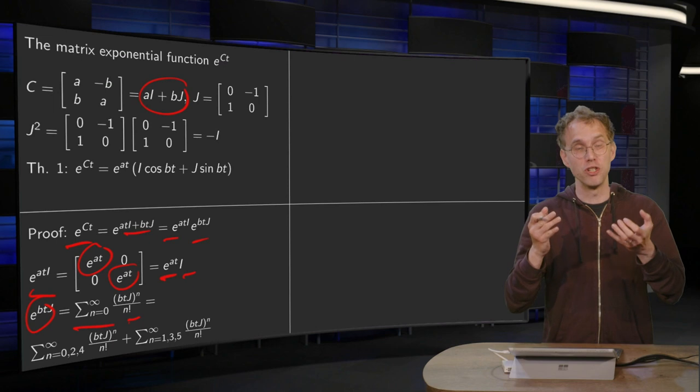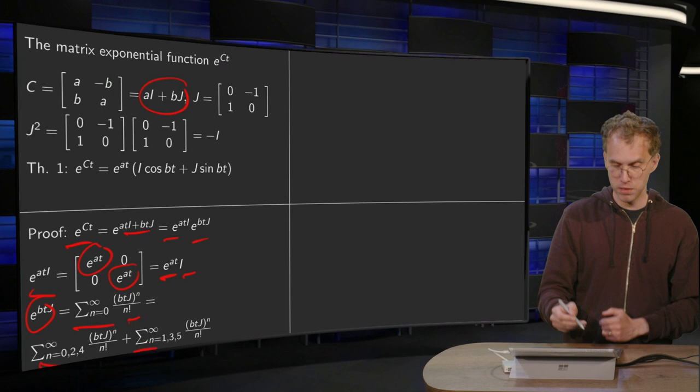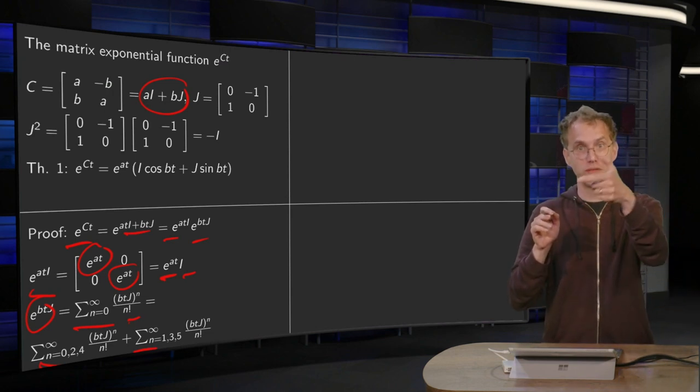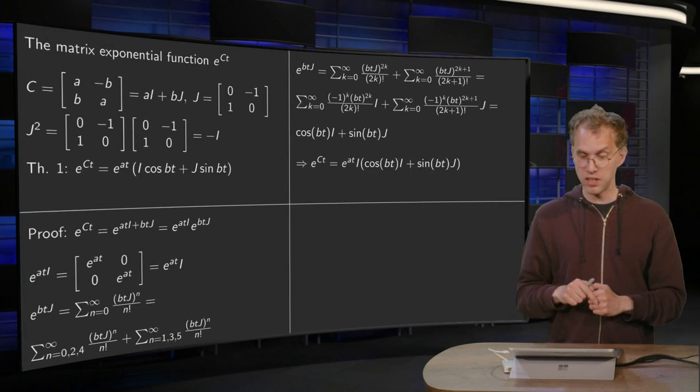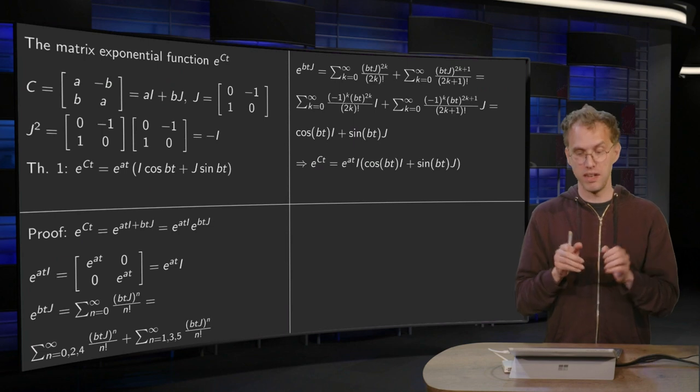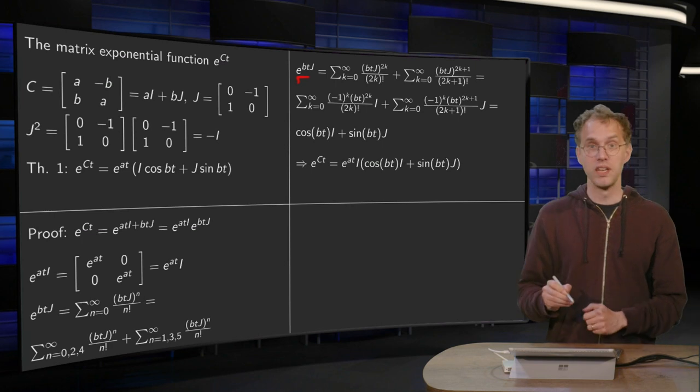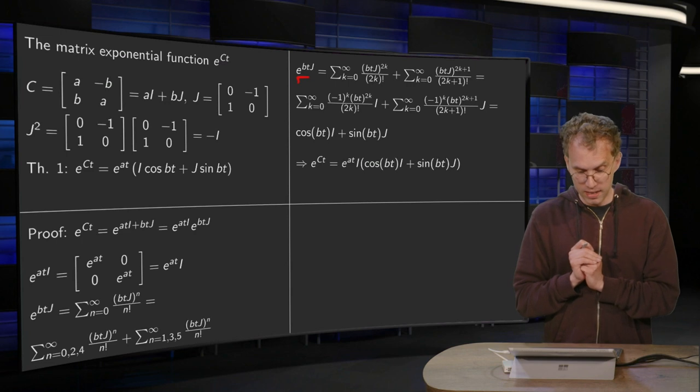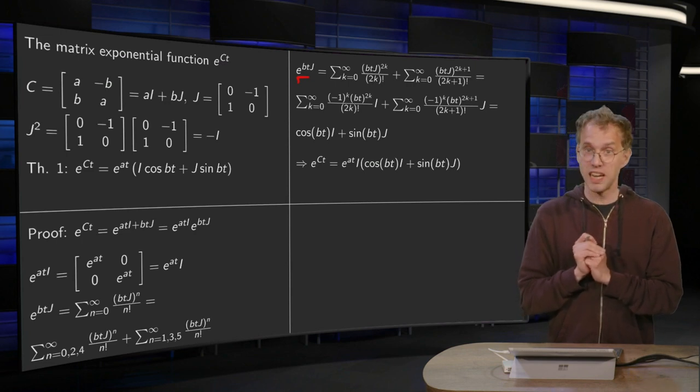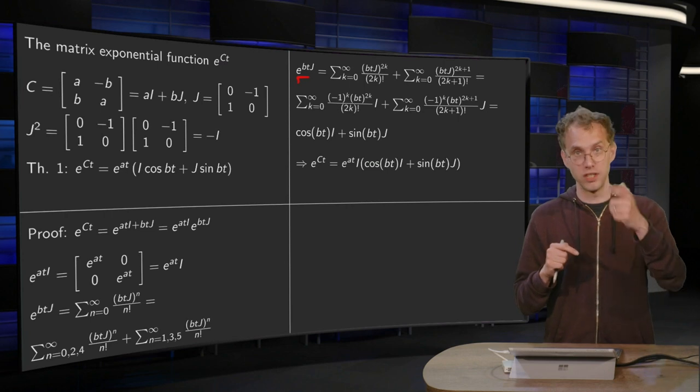And then we split this up in even terms and odd terms. So that's all we do here. Split the sum up in its even terms n equals 0, 2, 4 and odd terms 1, 3, 5. Then it is convenient to define a new index for both of them. So this exponential is given by, for the first sum, we say 2k equals n, so n is 2k. That means our k runs from 0, 1, 2 in order to get n 0, 2, 4.